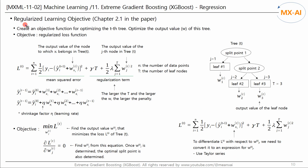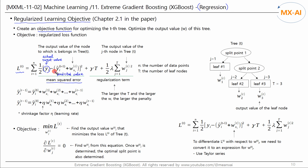Let's take a look at the regularized learning objective presented in Section 2.1 of the paper. We create an objective function to optimize the tree of iteration round T. The objective function L is defined such that, since it is a regression problem, we use the mean squared error as the loss function — specifically, the squared difference between the actual target value Y and the predicted value.